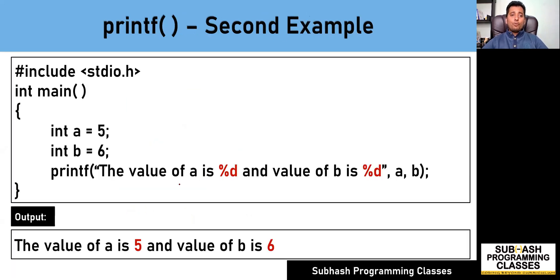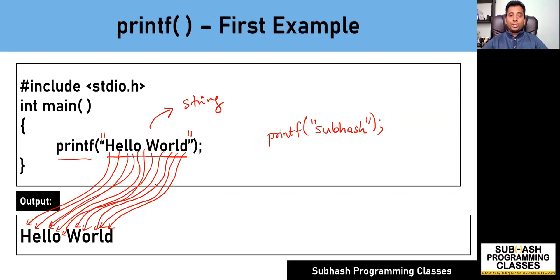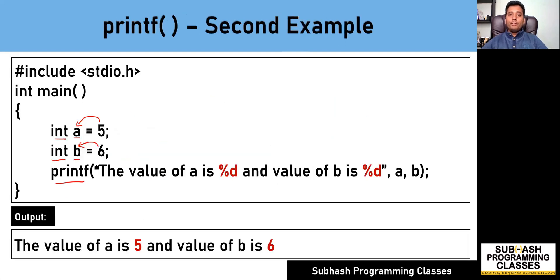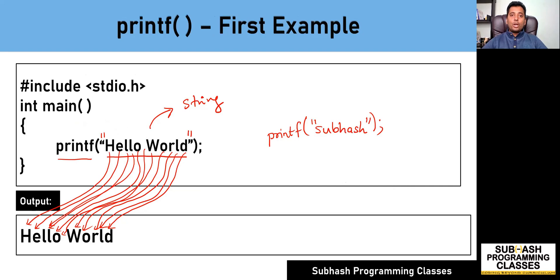This is the second example of printf. Before looking at the printf function, let us understand what is written before it. We have two variables, a and b, both of type integer. A contains the value 5 and b contains the value 6. After these two lines, we have the printf function. When you compare this version of printf with the one we discussed earlier, you can see there is a lot of difference — this printf takes not just one string but also two more parameters.